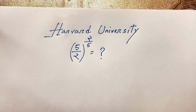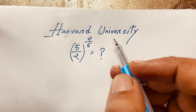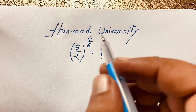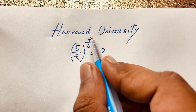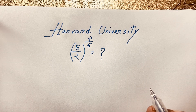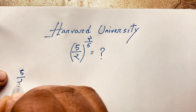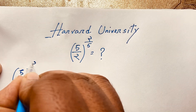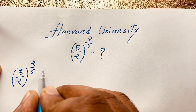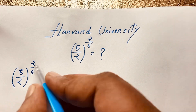Hello everyone. In this video we solve a nice radical math question — a Harvard elementary high school math question. The question is: (5/2) to the power (2/5) equals what? Our expression is (5/2)^(2/5).